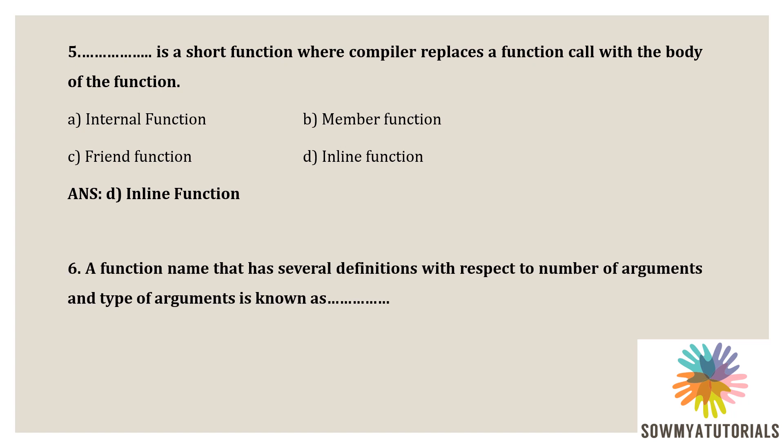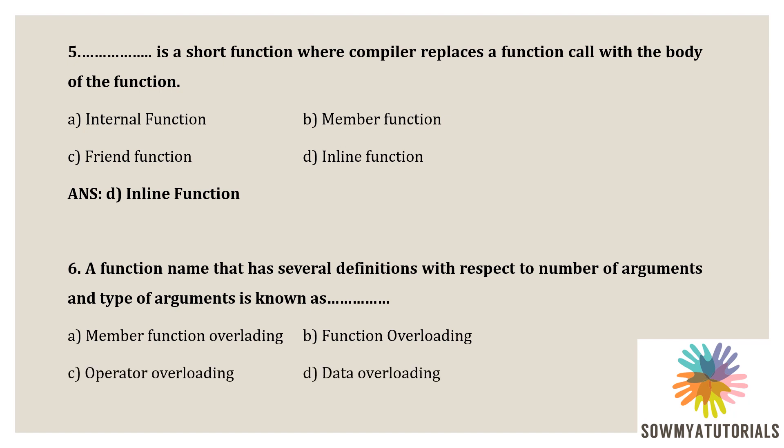A function that has several definitions with respect to number of arguments and types of arguments is known as? Options are: A) member function overloading, B) function overloading, C) operator overloading, D) data overloading. The correct option is function overloading, because function overloading means two or more functions have the same name but differ in the number of argument list and their data types. A function name that has several definitions with respect to number and types of arguments is called function overloading.